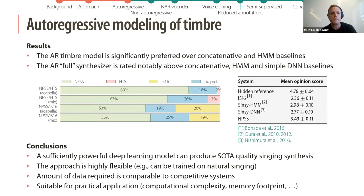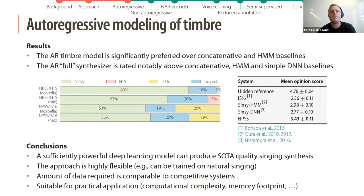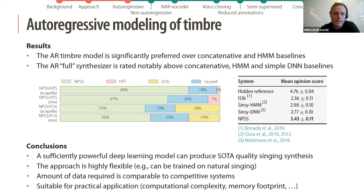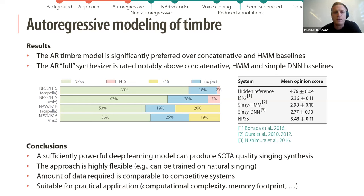The results show that the autoregressive timbre model is significantly preferred over concatenative and HMM baselines. The autoregressive full synthesizer is rated notably above concatenative, HMM, and a simple DNN baseline. The conclusions are that a sufficiently powerful deep learning model can produce state-of-the-art quality singing synthesis, it's a very flexible approach that can be trained on natural singing, the amount of data is quite comparable to competitive systems, and computational complexity and memory footprint are quite reasonable.